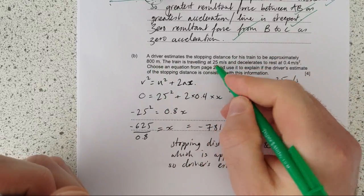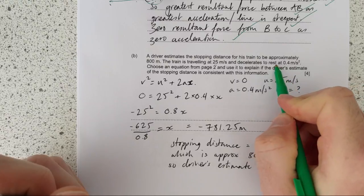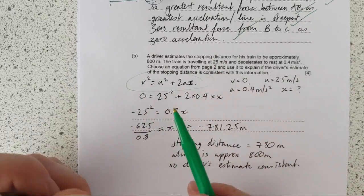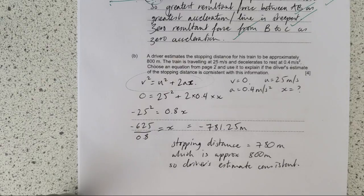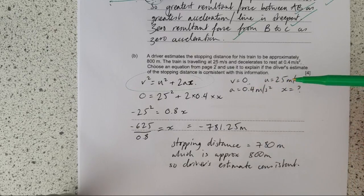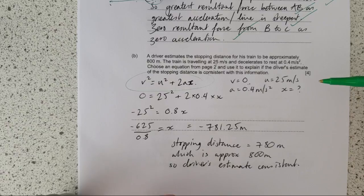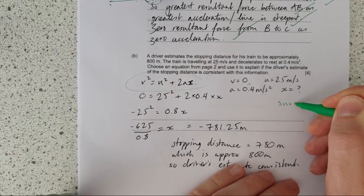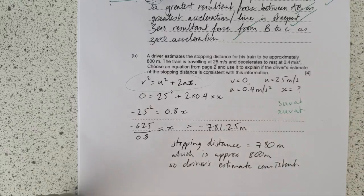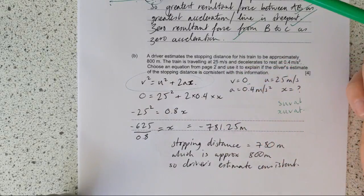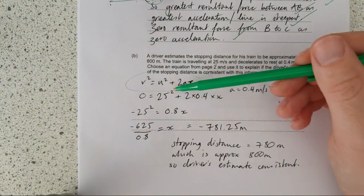A driver estimates the stopping distance for its train to be approximately 800 meters. The train is traveling at this, that is U, decelerates to rest, that is V zero, 0.4 meters per second squared. Choose an equation from page two - in EDUQAS they have all of the SUVAT equations. And this is the one that you need to use in this case. How did you decide which equation you need to use? Well, what you do is you write down what you know. You know the final speed is zero, the initial speed is 25, you know the acceleration, and you want to know the distance. So you basically identify what you know, and then you select the equation.